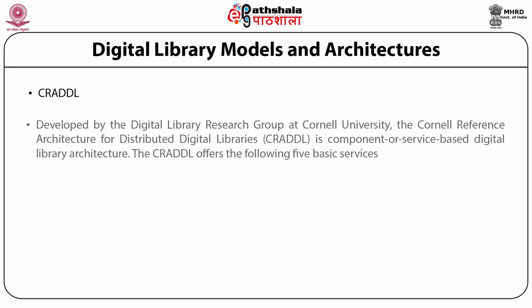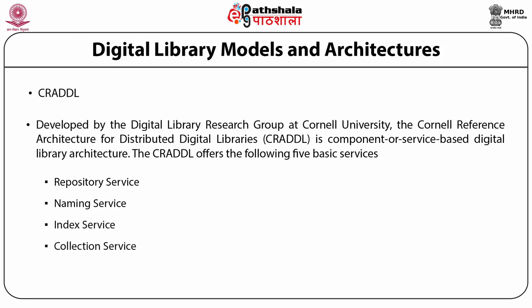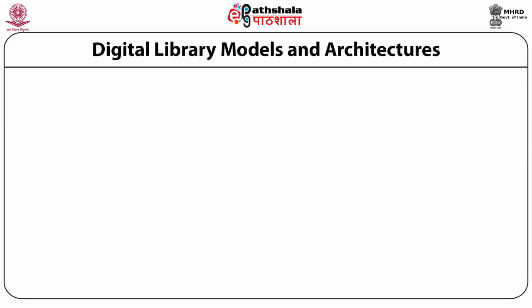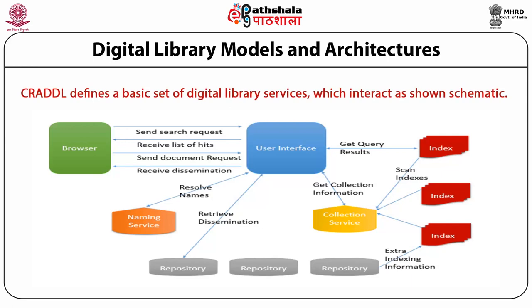CRADDL has been developed by the digital library research group at Cornell University. It is known as the Cornell Reference Architecture for Distributed Digital Libraries, that is CRADDL. It is a component or service-based digital library architecture. CRADDL offers five basic services: repository service, naming service, index service, collection service, and user interface service gateways. The schematic representation of CRADDL architecture defines a basic set of digital library services and their interactions as shown on your screen.